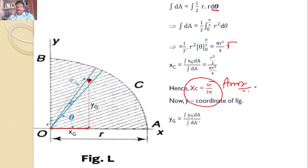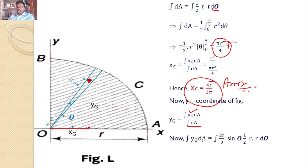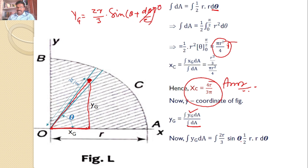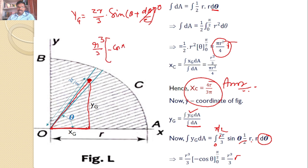The same approach applies for the y-coordinate of the quarter circle centroid: yc equals integral yg·dA divided by integral dA. Integral dA was already calculated as pi·R squared by 4. Now we calculate integral yg·dA. Using this right angle triangle, yg equals 2R by 3 into sin(theta + d theta). But d theta is very small compared to theta, so it is 2R by 3·sin theta. Then dA equals ½·R·R·d theta, with theta limits from 0 to pi/2. Performing the integration: R squared cancels, and once again you get R cubed by 3 times the integral of sin theta. The integral of sin theta is minus cos theta. Evaluating from 0 to pi/2 gives R cubed by 3 times [minus cos(pi/2) minus (minus cos 0)]. Since cos(pi/2) is 0 and cos 0 is 1, this gives 1, so integral yg·dA equals R cubed by 3.